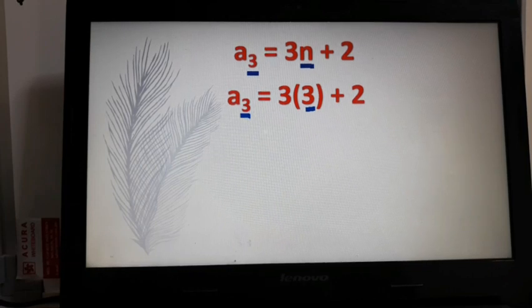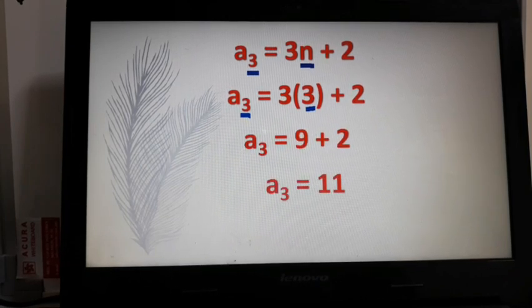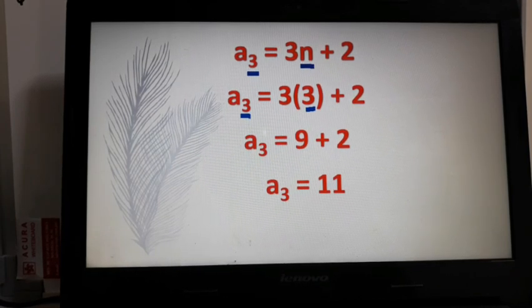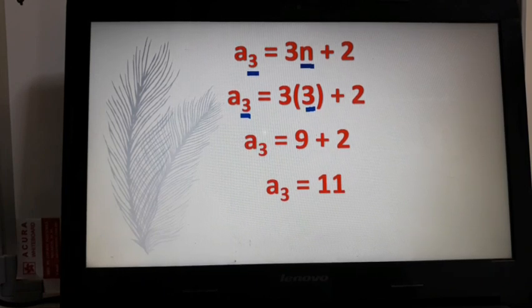So 3 times 3, that will give us 9. Plus 2 will give us 11. So that means our third term is equal to 11.